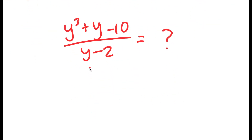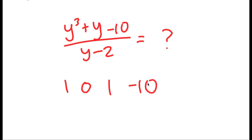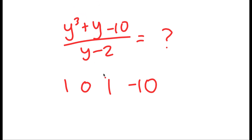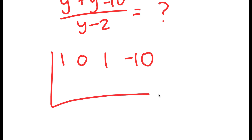So what I'm going to do is divide y to the power of 3 plus y minus 10 by y minus 2, because y minus 2 equals 0 means y equals 2 is a solution. To do this, I'm going to use synthetic division. I'm going to look at the coefficients of my numerator: I have 1, which is the coefficient of y to the power of 3; 0, which is the coefficient of y squared; 1, which is the coefficient of y; and negative 10. This is all with 2.